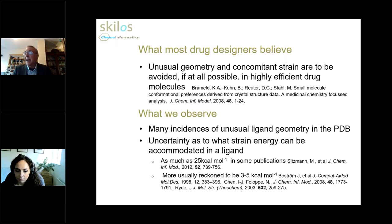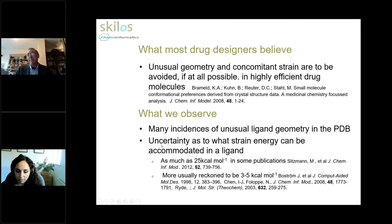But what do we actually observe? We actually observe many incidences of unusual ligand geometry in structures in the PDB. Where does that come from? We also have some uncertainty about what strain energy can actually be accommodated in a ligand when it's bound to a protein. Some publications have given estimates as much as 25 kilocalories per mole — I don't believe that's right. A more usual estimate is around three to five kilocalories per mole, but that could still lead to some unusual geometry in your ligands.